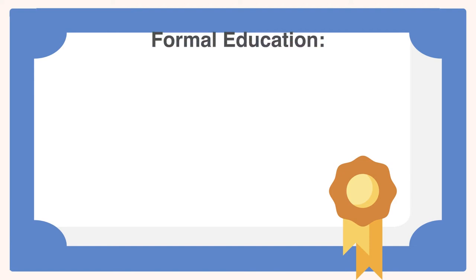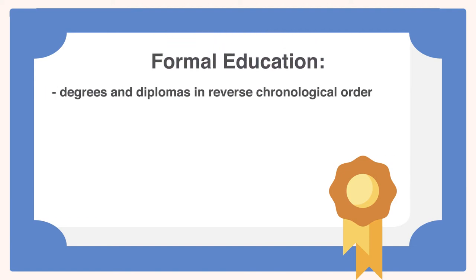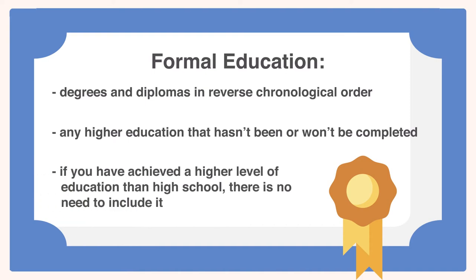In terms of formal education, you should include any degrees or diplomas you hold in reverse chronological order, meaning begin from the most recent and go backwards from there. Include any higher education that hasn't been or won't be completed. If you have achieved a higher level of education than high school, there is no need to include it with the rest of your education as it will be assumed.